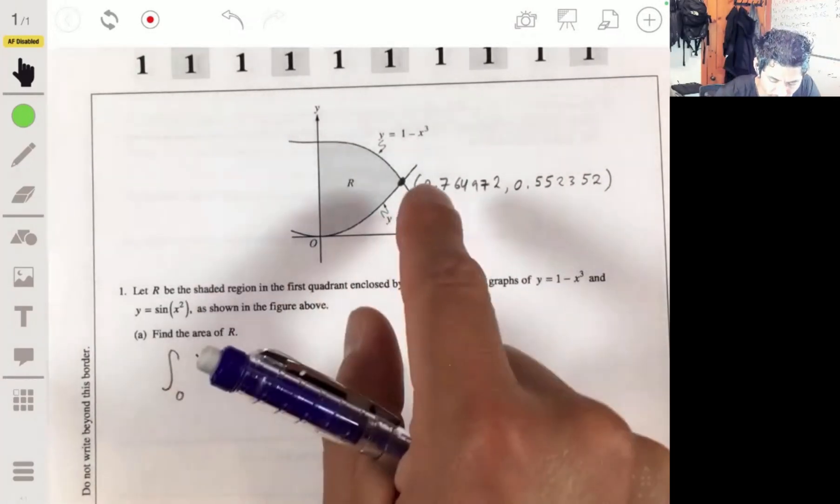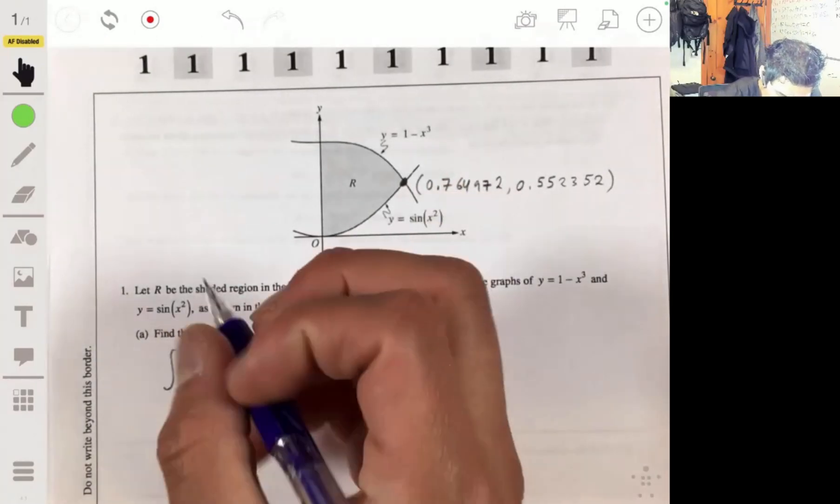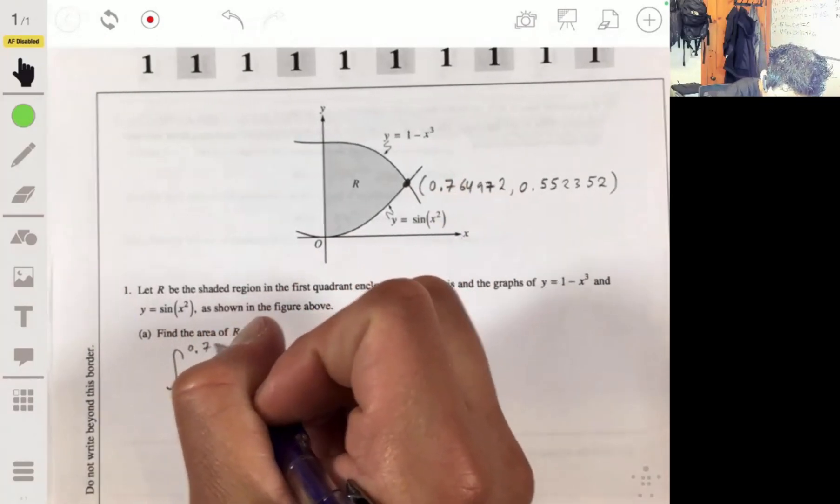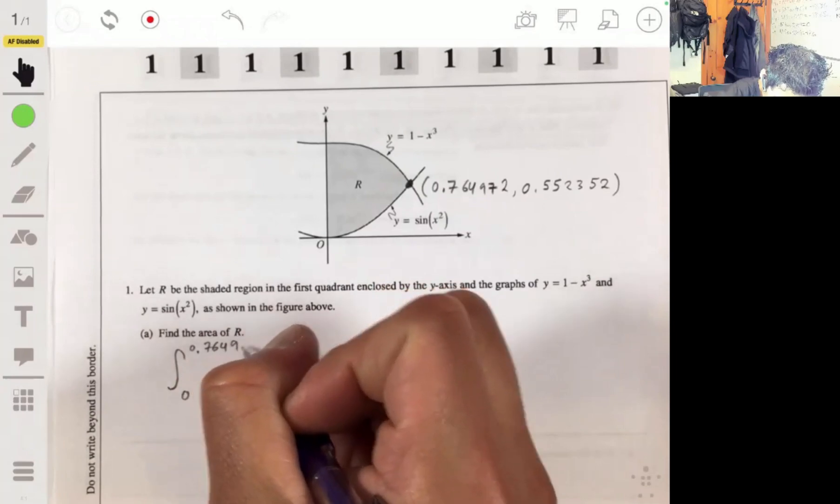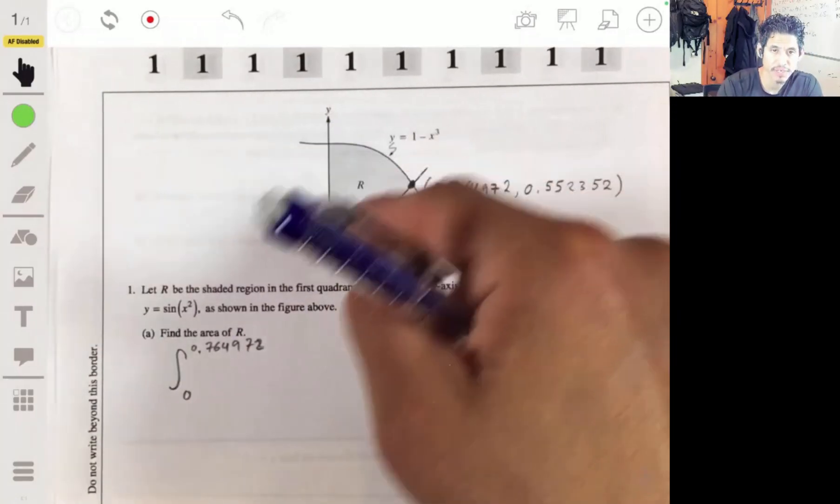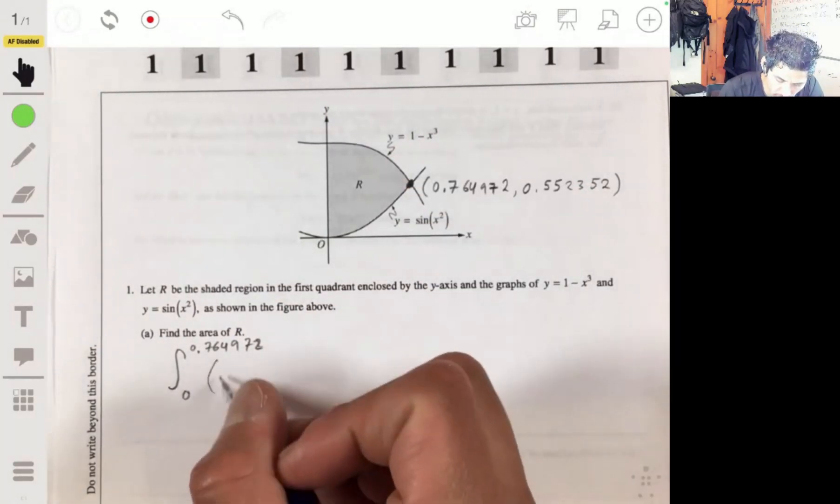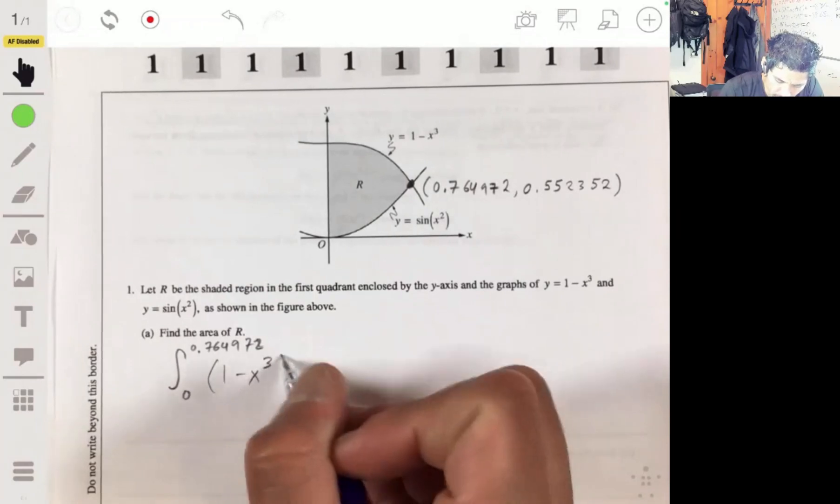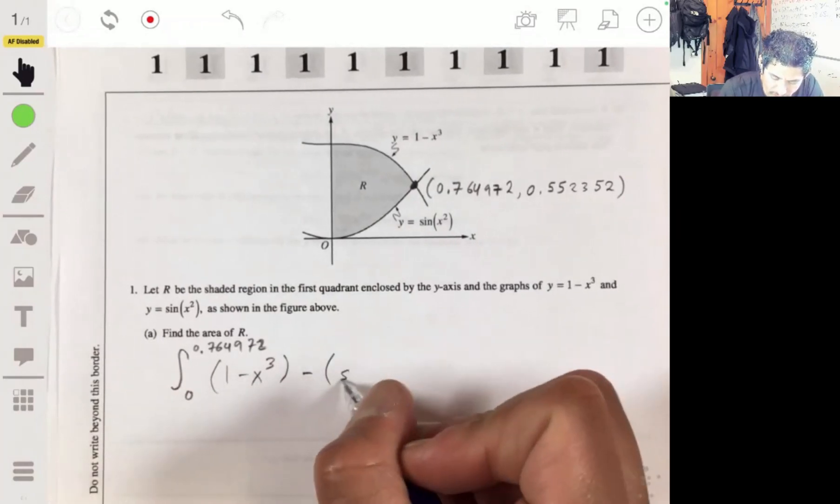Now, that means we're going to integrate from zero up to 0.764972. And we're going to have the top function minus the bottom one. So it's going to be 1 minus x cubed minus the sine of x squared.